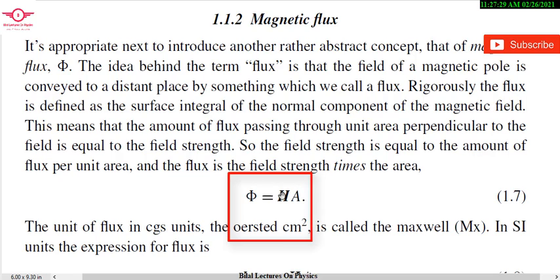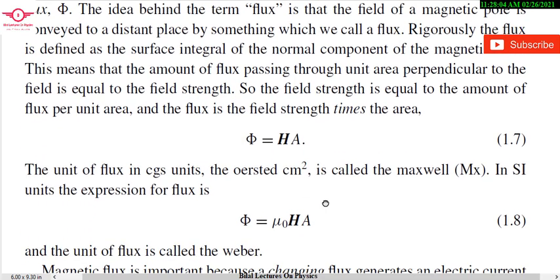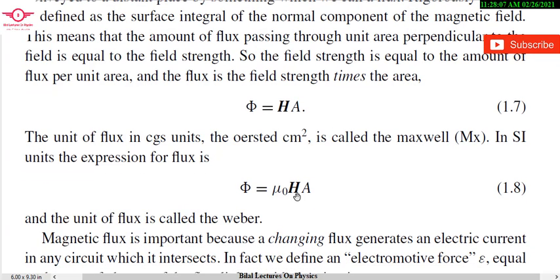The flux is equal to field strength H times area A. The SI unit of field strength is the Oersted, so the overall unit of flux equals Oersted times centimeter squared in CGS units, which is also called the Maxwell. In SI units, the expression for flux is Φ = μ₀HA, and the unit of flux in SI is called the Weber.